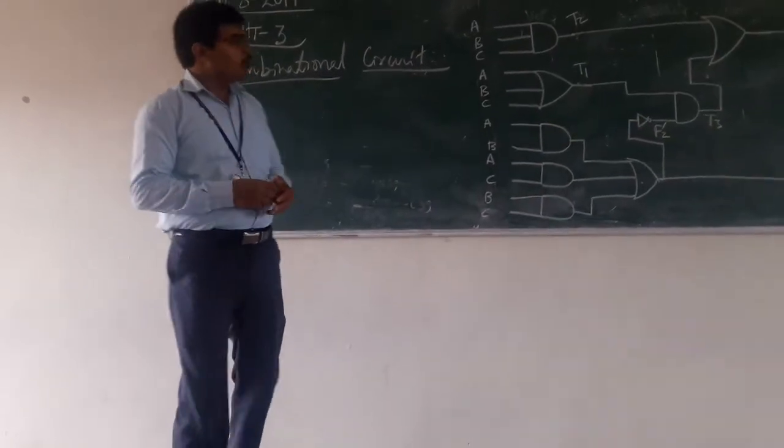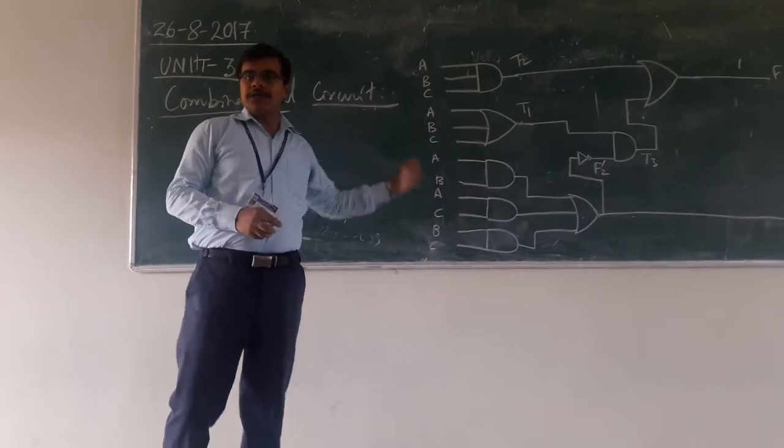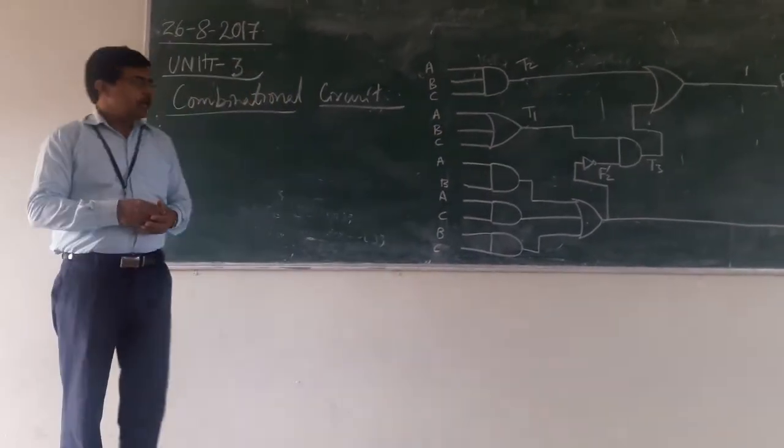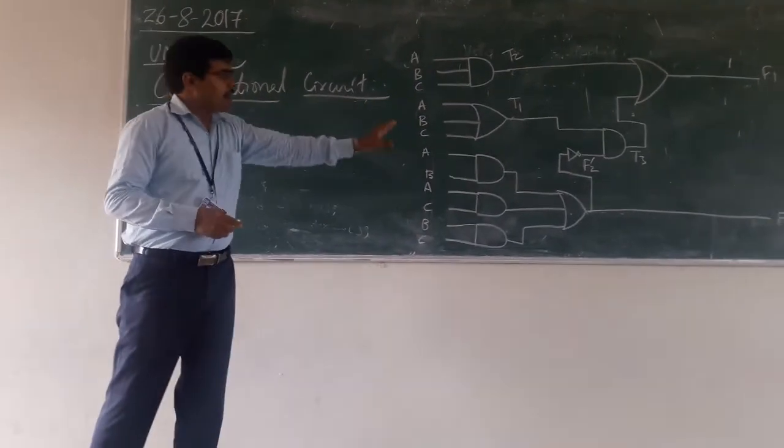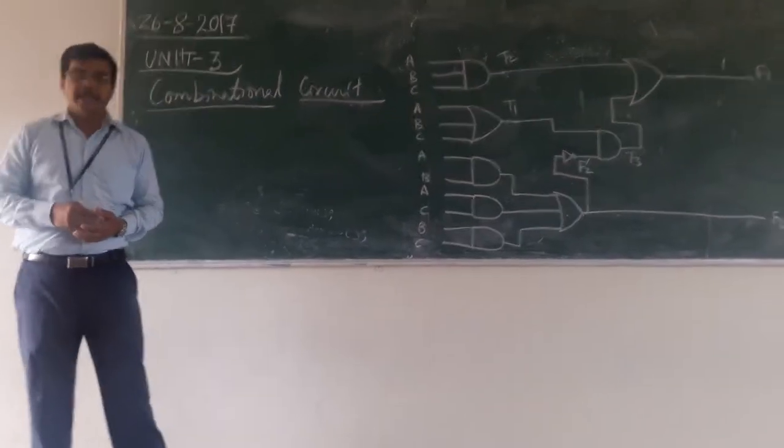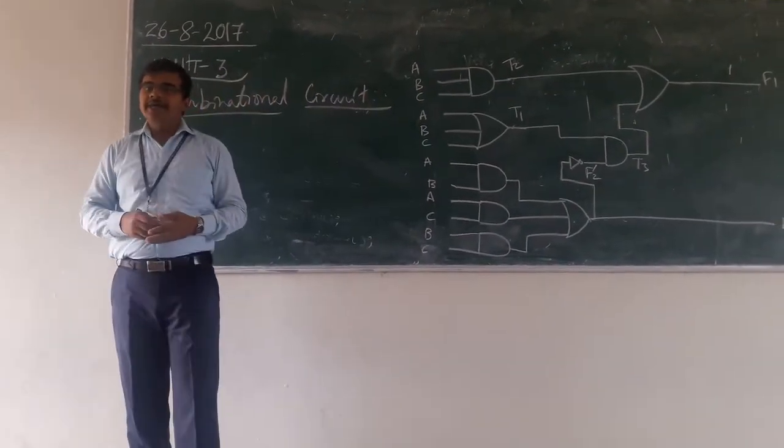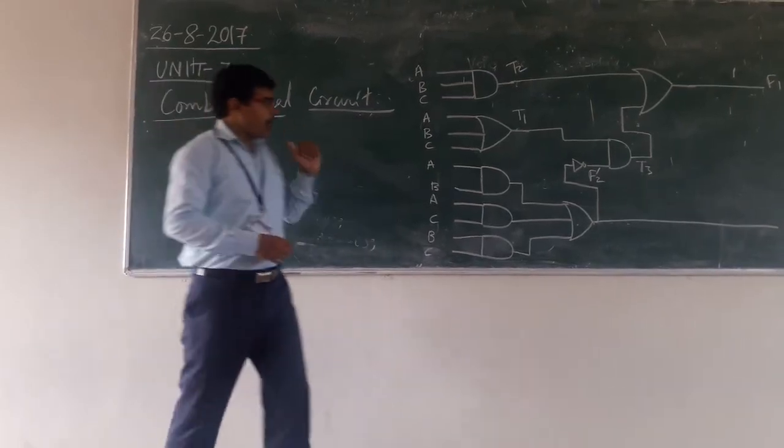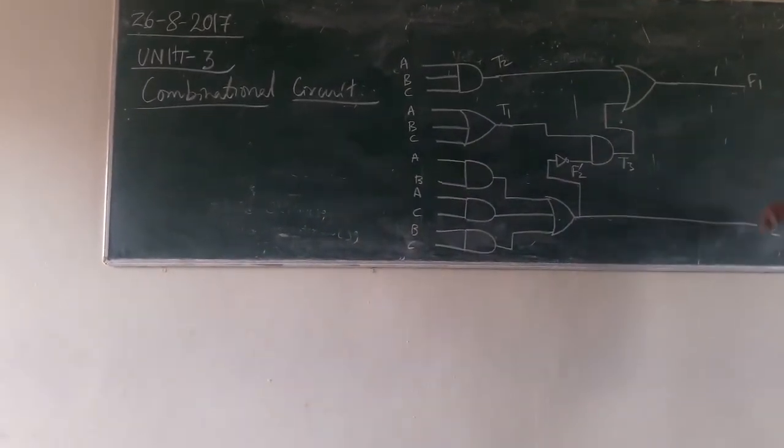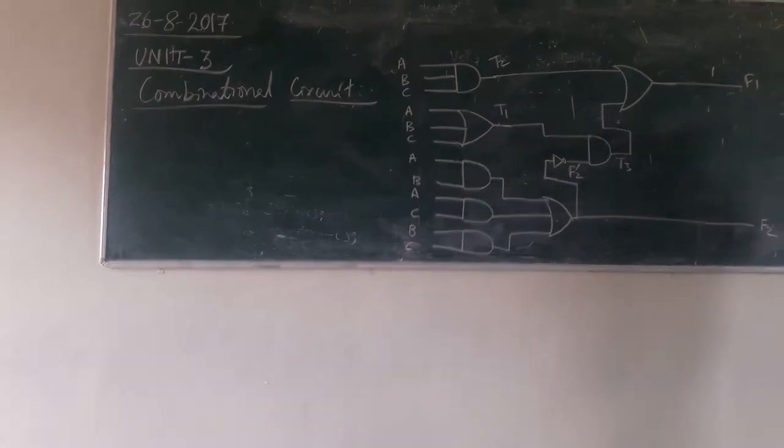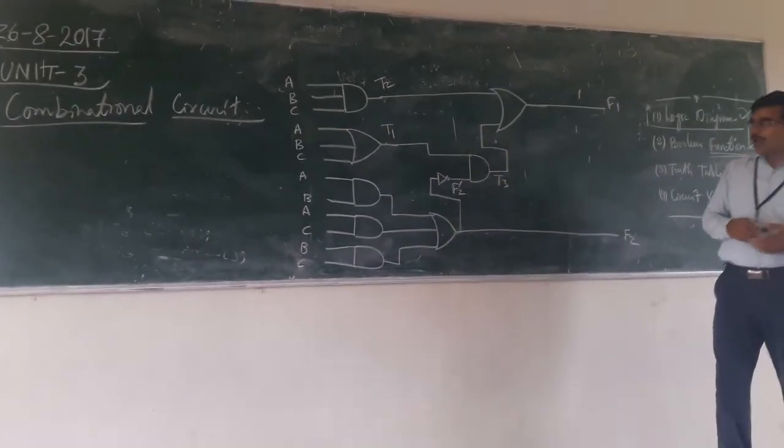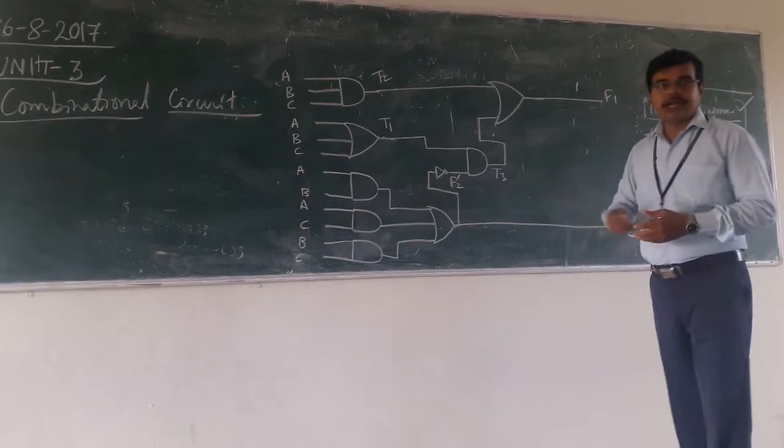Here you are having one logic diagram. In this, by seeing, we can say that you are having A, B, and C as input, and you are having F1 and F2 as output. You are having intermediates also.